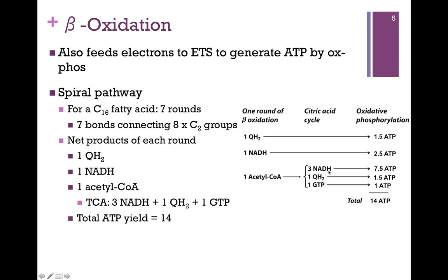One round of the citric acid cycle will give us three molecules of NADH, one molecule of QH2, and one molecule of GTP. So our total yield for one round includes about 14 ATPs. Each QH2 through the electron transport chain can be converted to about 1.5 ATPs, and each NADH gives us about 2.5 ATPs. GTP is an ATP equivalent. So one round: 14 ATPs. If you're doing this kind of calculation to determine the ATP yield for a given fatty acid chain, it's easiest to first determine how many rounds of beta-oxidation — for each round, you'll produce four molecules of ATP — then determine how many acetyl-CoAs you'll produce, and that will give you 10 molecules of ATP for each acetyl group.